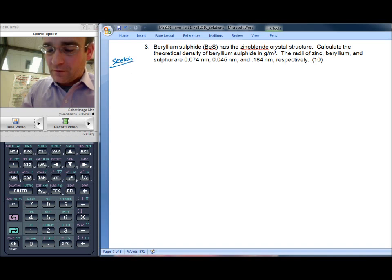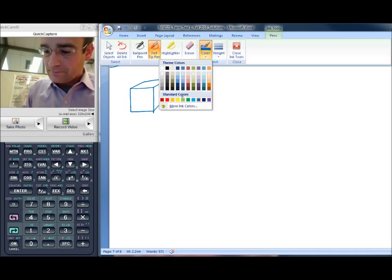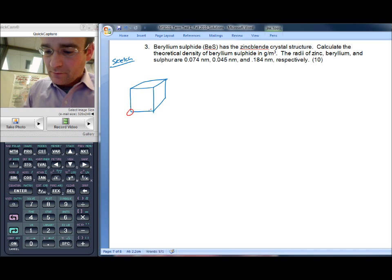So we'll start with a sketch of the zinc blend crystal structure. So it's cubic. And each of the corners is a sulfur atom.